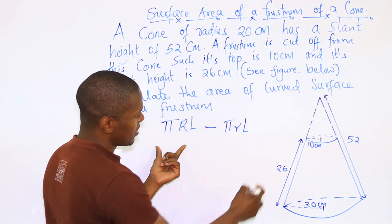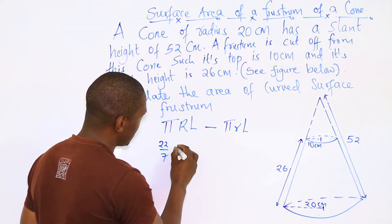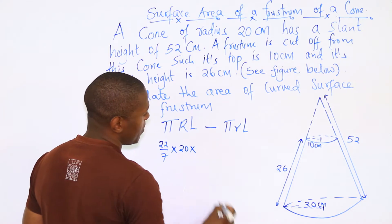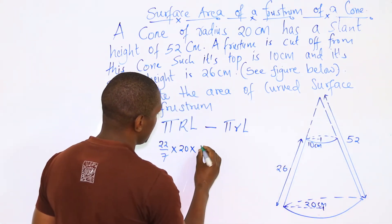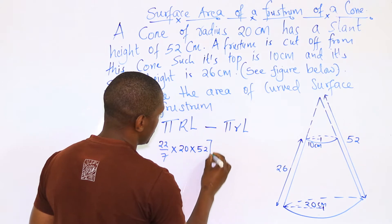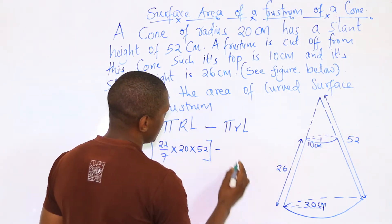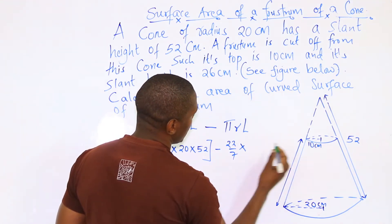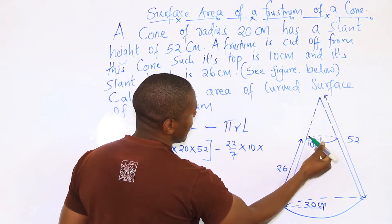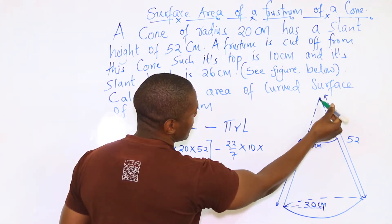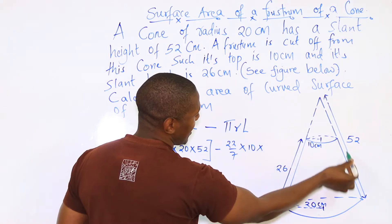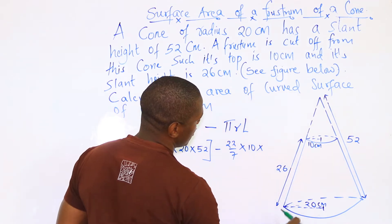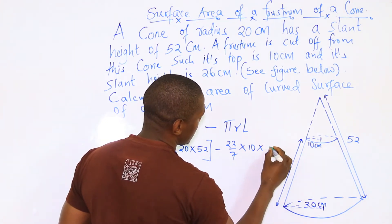Substituting these values, we have 22/7 times the radius of the larger cone, which is 20, multiplied by the slant height of the larger cone, which is 52. We subtract 22/7 multiplied by the radius of the smaller cone, which is 10, multiplied by the slant height of the smaller cone. The slant height of the smaller cone is the slant height of the larger cone, which is 52, minus the slant height of the frustum, which is 26. So 52 minus 26 is 26.